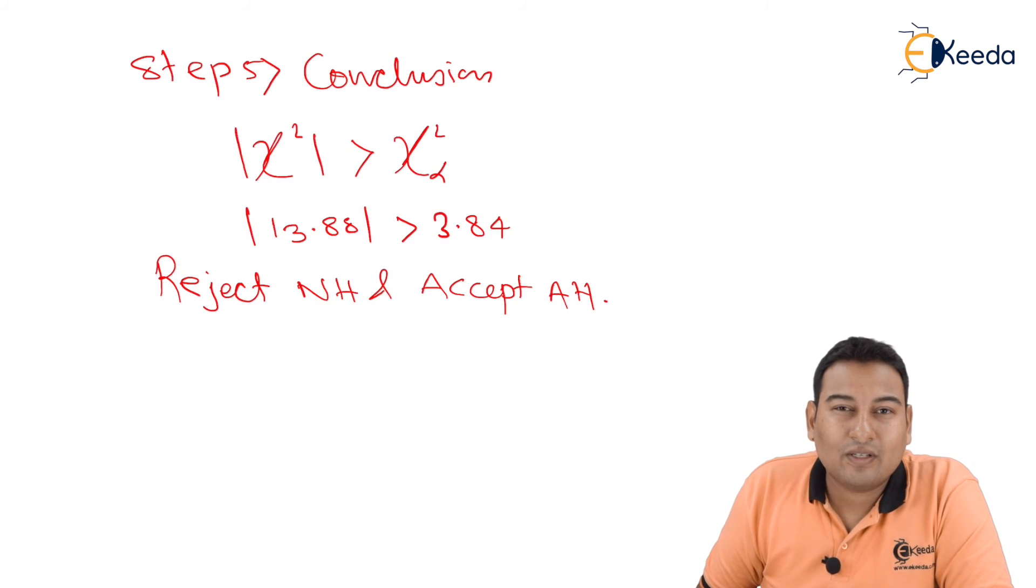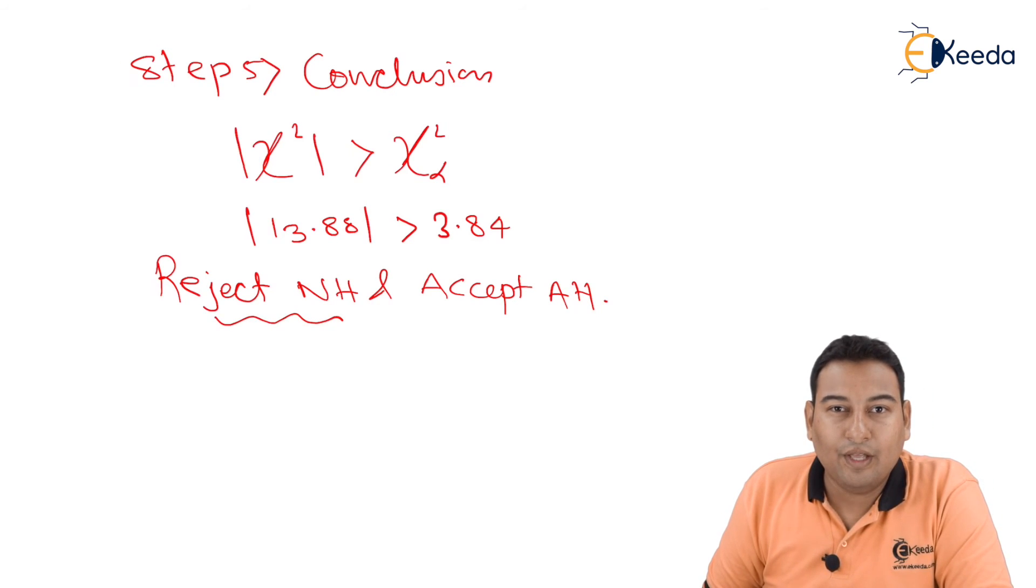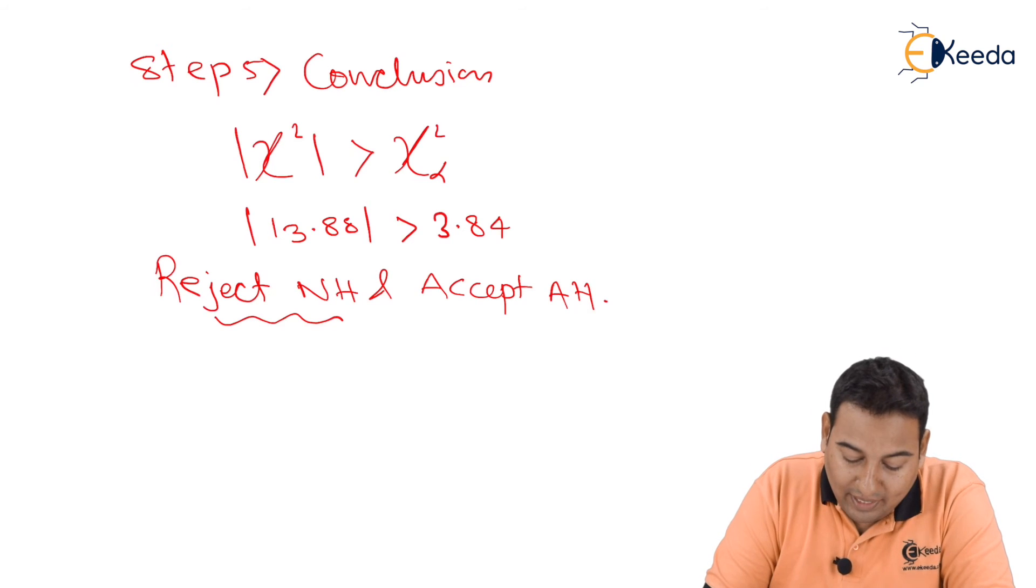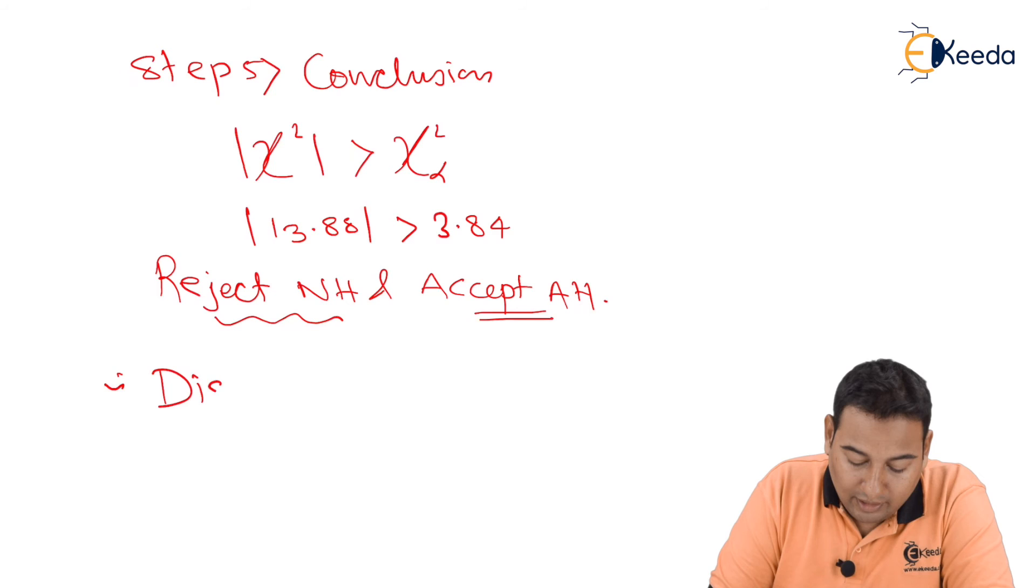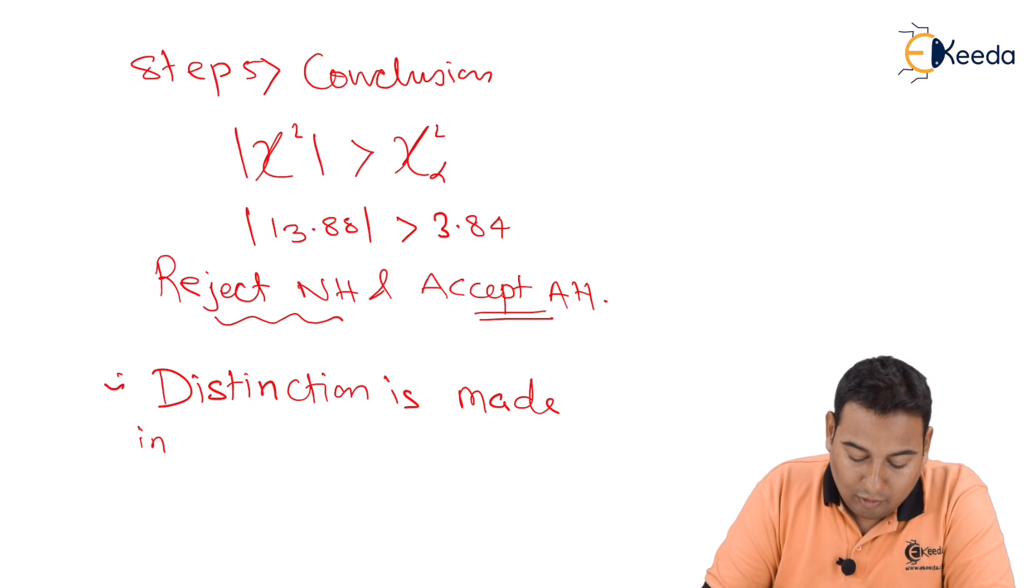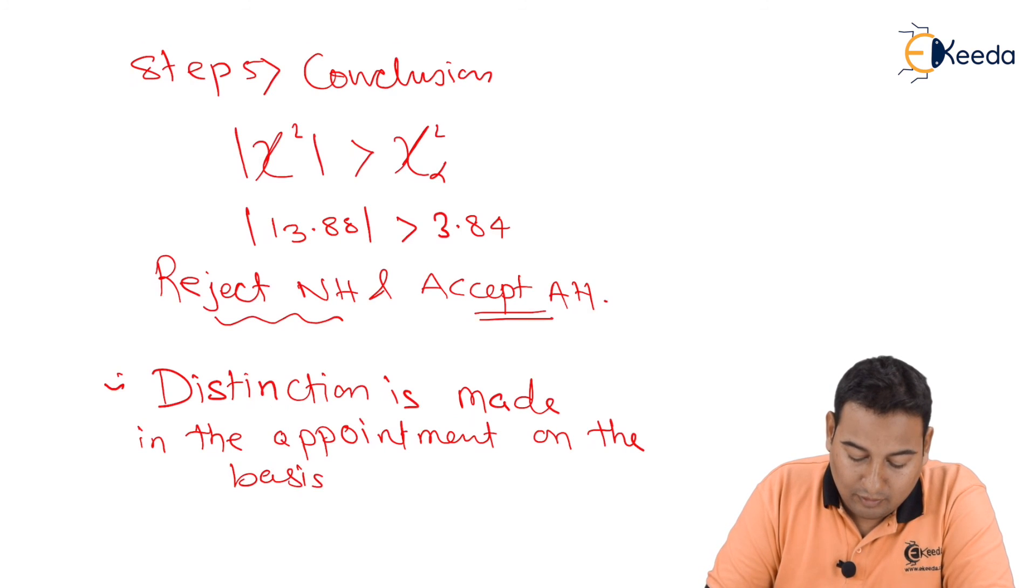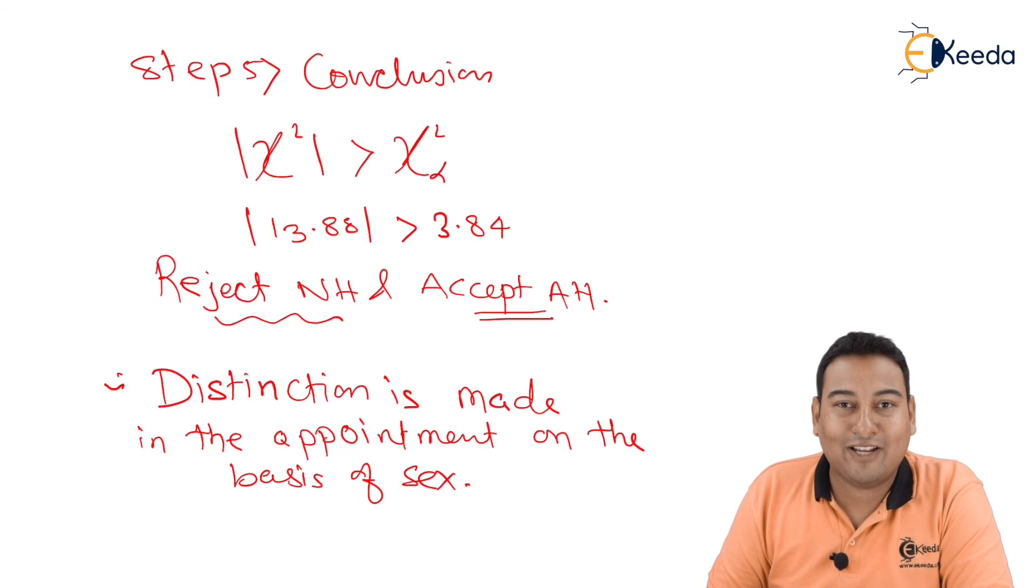Our null hypothesis was there is no distinction made in the appointment on the basis of sex, and we rejected it. We rejected the claim, so we accepted the alternate hypothesis. Therefore, the conclusion is distinction is made in the appointment on the basis of sex. So we are done with the problem. Hope you understood it, thank you.